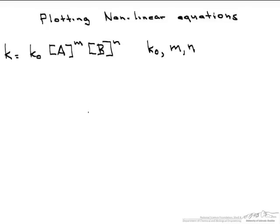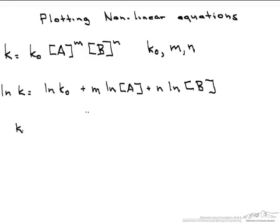So the first thing we're going to do is linearize this. We take the natural log of both sides, so the ln of k equals the ln of k0 plus m ln of A plus n ln of B. Now in order to solve this, we need to be given data for k when we have some A and some B.